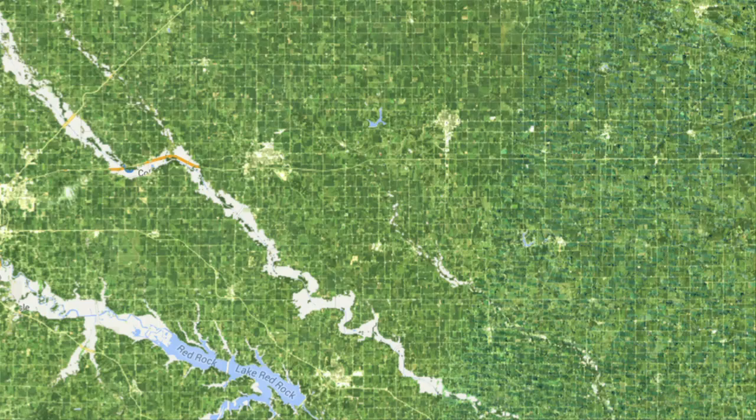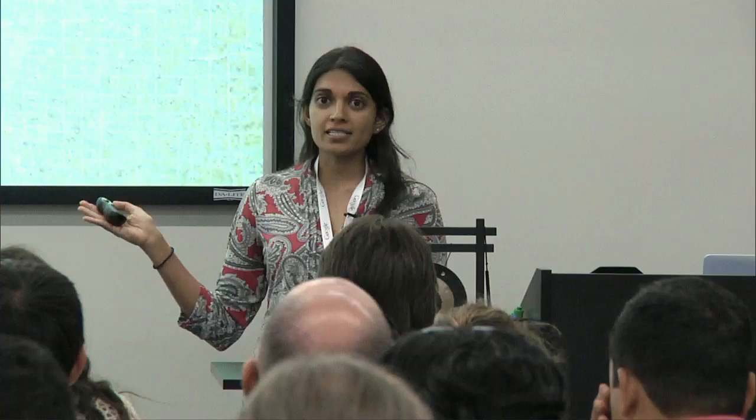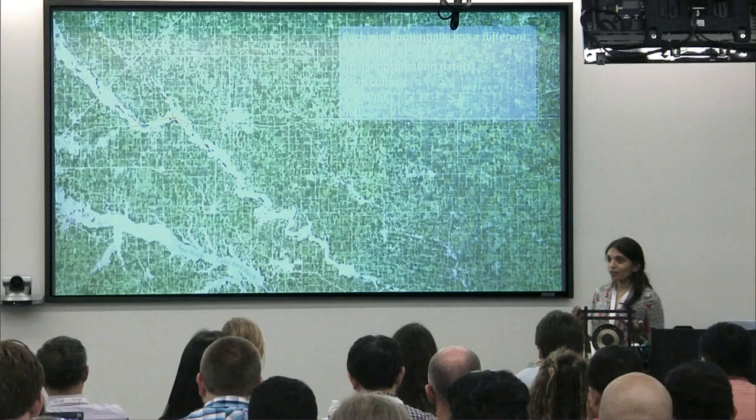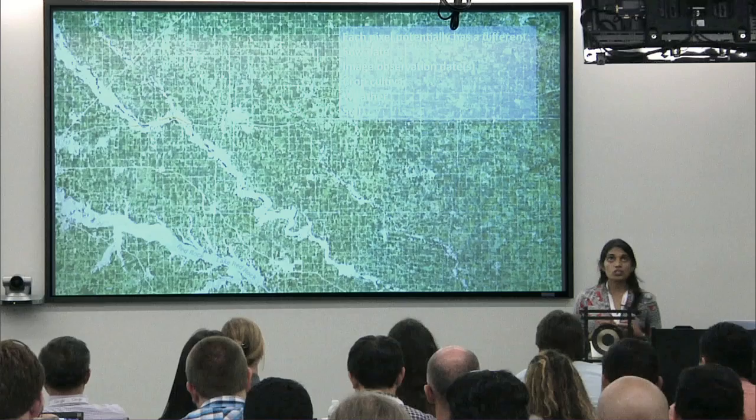Here's an example of a Landsat cloud-free mosaic overlay of agricultural fields in the Corn Belt in the US. What we essentially want to do is translate these greenness measures we're seeing from satellites into yields. But there's a lot of complexity in doing this because each of these different fields may have different management practices, like different sow dates, different crop cultivars. They may experience different weather, have different soil types. There's a lot of heterogeneity that makes it difficult to just create a very linear one-to-one relationship between a vegetation index and yield.